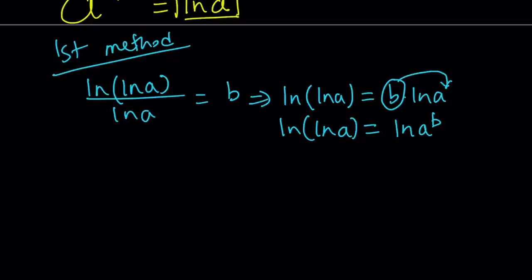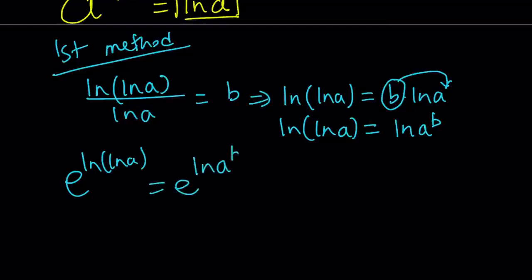b can be moved and made an exponent, so it's going to become ln ln a equals ln a to the power b. Now we have ln's on both sides — we can do e to the power of both sides. That's going to give us e to the power ln ln a equals e to the power ln a to the power b. And e to the power ln something is always going to be that thing, so we get ln a equals a to the power b.